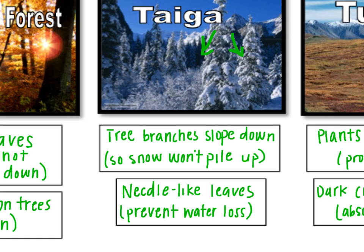You'll also see a lot of trees in the taiga that have needle-like leaves. That conserves water because needle-like leaves don't have a lot of surface area to lose water through. It also allows them to conserve heat. So those needle-like leaves primarily prevent water loss.